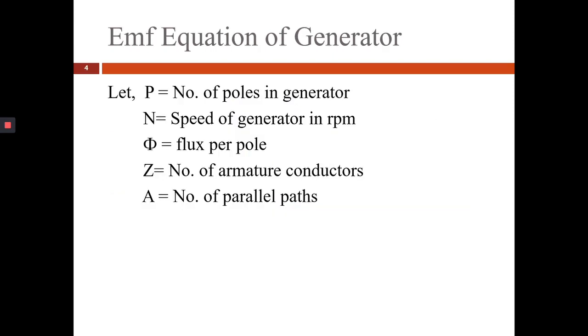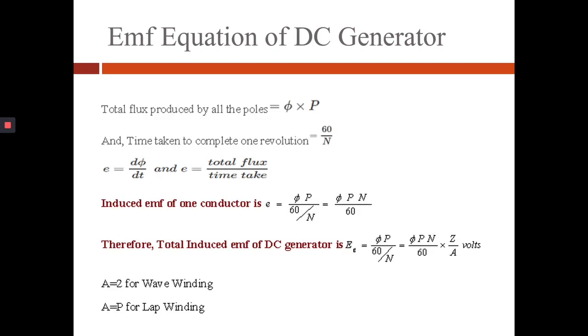Now we will see EMF equation of generator. Let P equal to number of poles in generator, N equal to speed of generator in RPM, Phi equal to flux per pole, Z equal to number of armature conductors and A equal to number of parallel paths. Then the total flux produced by all poles is given by Phi into P and the time taken to complete one revolution equals 60 divided by N.